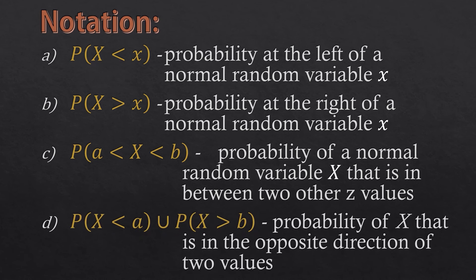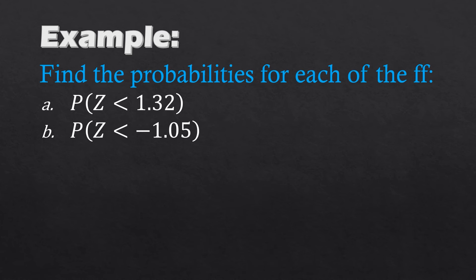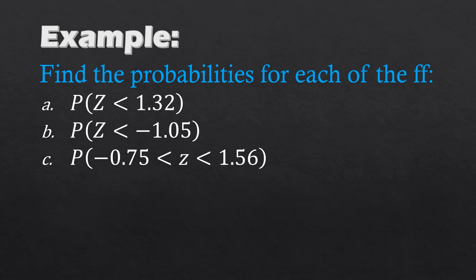Lastly, we have the probability of X less than A union probability of X greater than B — this is the probability in the opposite direction of the two values A and B. Now let us proceed to our examples. Find the probabilities for each of the following: probability of Z less than 1.32; probability of Z less than negative 1.05; probability of Z greater than negative 0.75 and less than 1.56; and probability of Z greater than negative 0.88.